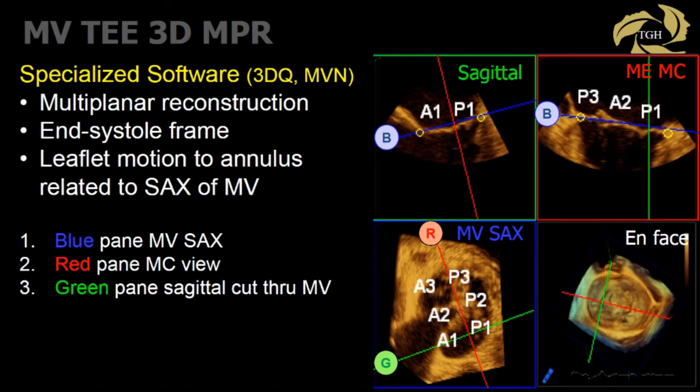What about specialized software? You can use 3DQ or mitral valve software on Philips machines. What you do is deconstruct your 3D volume into multi-planar reformatting or reconstruction. Here, it's an end-systolic frame, and we're trying to scroll through the valve to look for leaflet motion in relationship to the annulus. The blue plane represents a short axis through the valve; the red plane is often the commissural view; and the green plane represents the sagittal cut through the mitral valve. These tools help you understand pathology and the location of pathology.